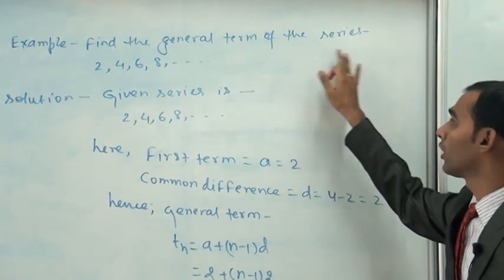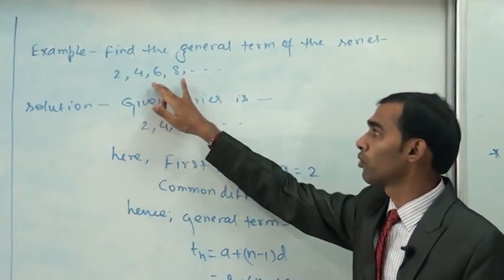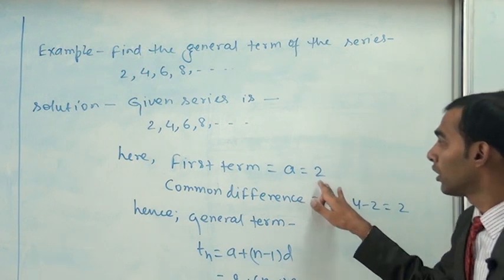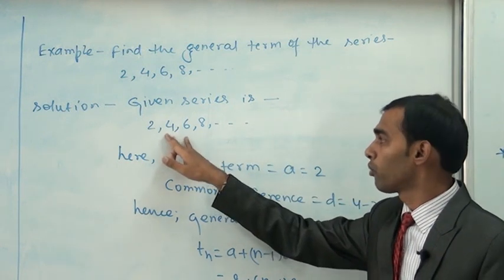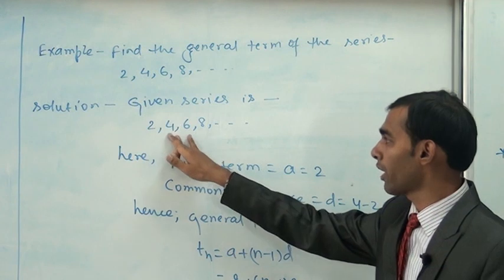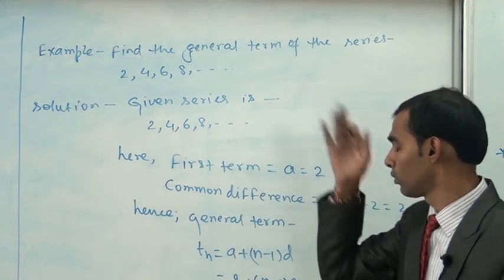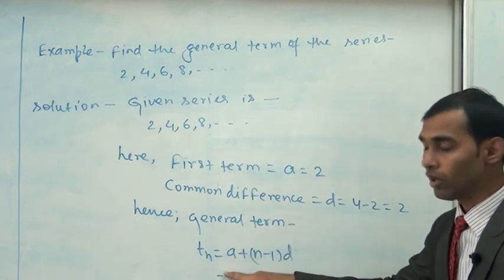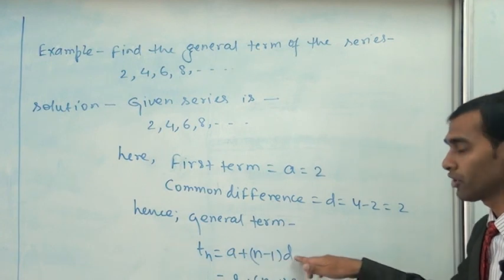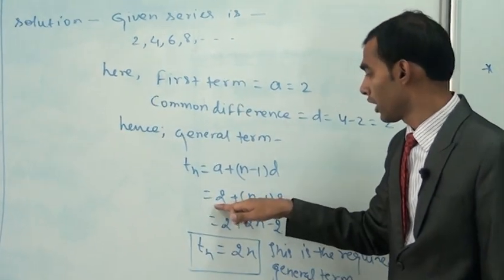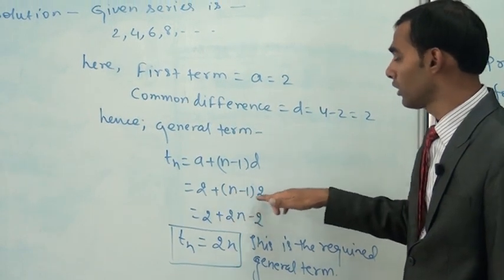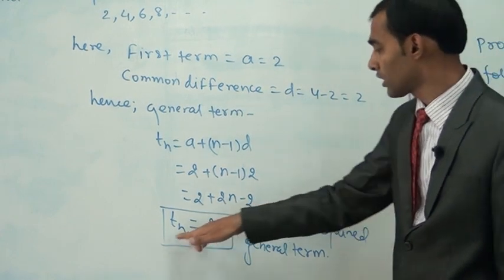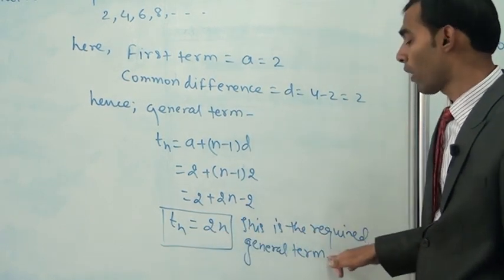Example: Find the general term of the series 2, 4, 6, 8. Here the first term is 2. The difference between any two consecutive terms: 4-2 = 2, 6-4 = 2, 8-6 = 2. So the common difference is 2. Now the general term tn = a + (n-1)d. Substituting a = 2 and d = 2: tn = 2 + (n-1)×2 = 2 + 2n - 2. Hence tn = 2n. This is the required general term.